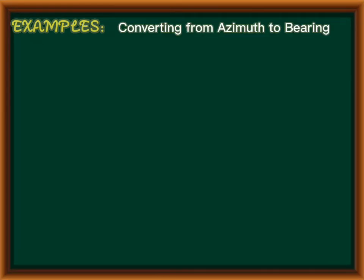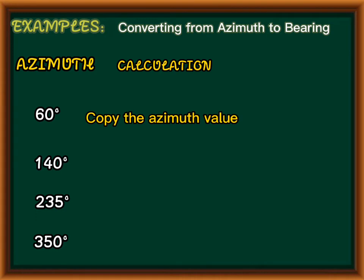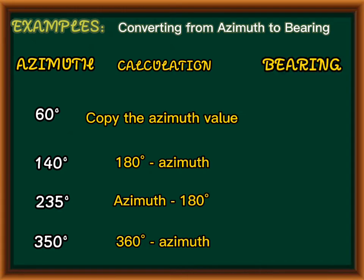So let's try an example in converting from azimuth to bearing. We have given azimuths. To convert, we use the appropriate formula. Since 60 degrees is in quadrant 1, we copy the azimuth value. Then 140 degrees is in quadrant 2, so we use the formula: bearing equals 180 minus azimuth. Since 60 degrees is in quadrant 1, the bearing is N60°E.